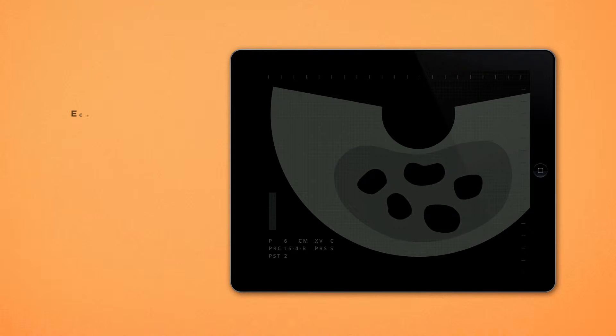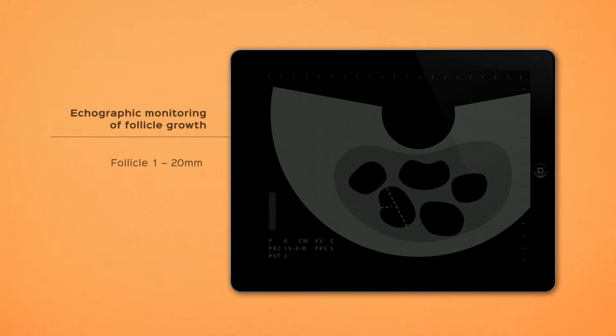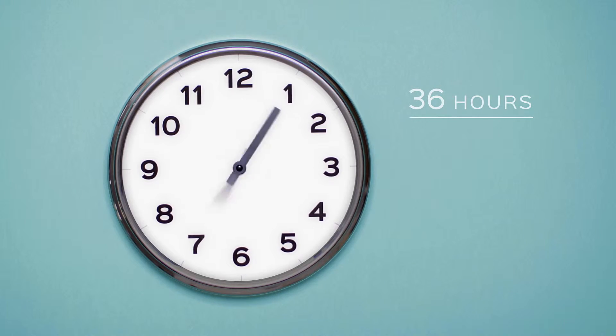During this time follicle growth is monitored by echographic examination. When the follicles are a suitable size ovulation is provoked and ovarian puncture is planned for 36 hours later.